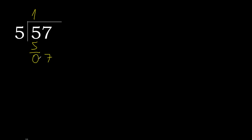Next, eliminate 0 on this side — bring down 7. 5 multiplied by 2 is 10, 10 is greater. Multiplied by 1 is 5. 7 minus 5 is 2.